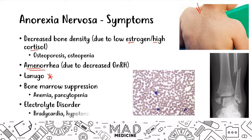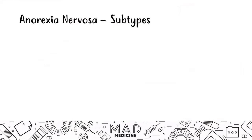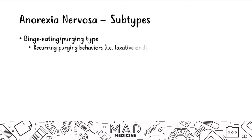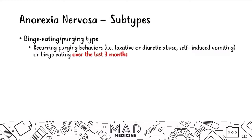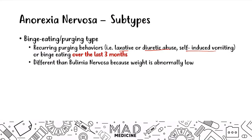There are two main subtypes of anorexia. The first is the binge eating and purging type, similar to bulimia: the patient recurrently binge eats and then purges via laxatives, diuretics, or self-induced vomiting, for at least three months. The key distinction from bulimia is that the BMI remains less than 18.5. Always check the BMI — if it's below 18.5 with purging behavior, it's the binge eating and purging type of anorexia nervosa.